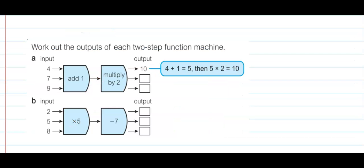In this question: work out the outputs of each of the two-step function machines. There are two step functions here. This is step 1 and this is step 2. In the first process we add 1, and then multiply by 2. If the first input value is 4: 4 add 1 is 5, then 5 multiply by 2 is 10.